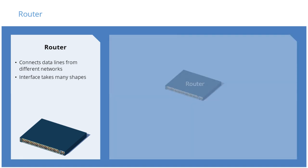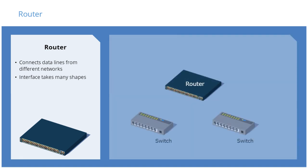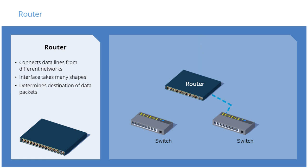When a data packet is received on one of the network interfaces, the router reads the address information in the packet to determine the ultimate destination. Then, using information in its routing table or routing policy, it directs the packet to the next network on its journey.